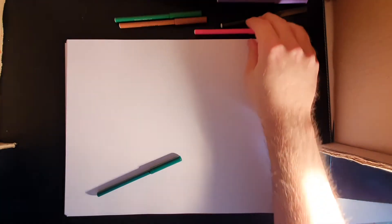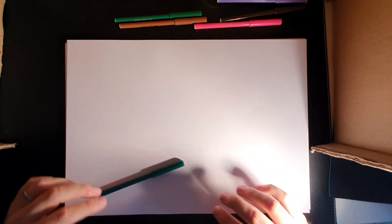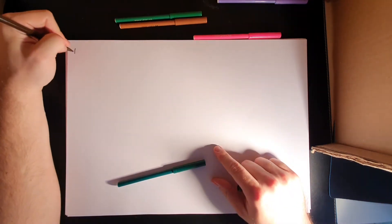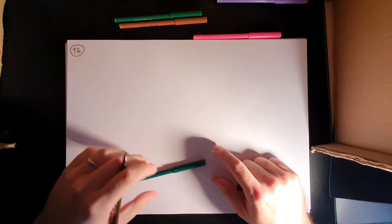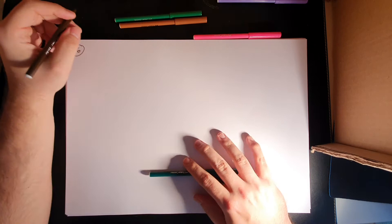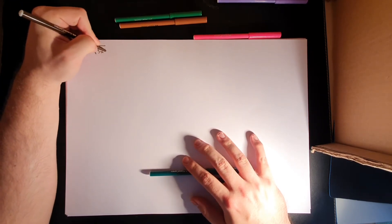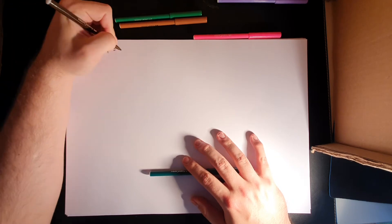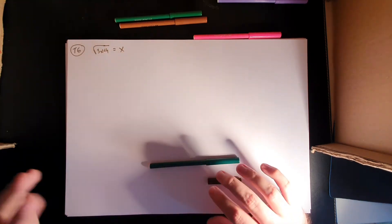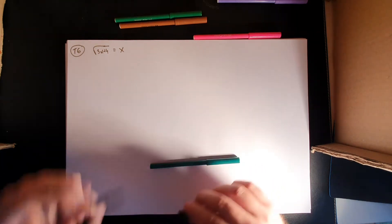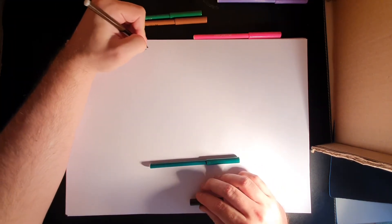Welcome back to the second part of videos about irrational equations. Let's look at the following task, task 6. The equation is: square root of 3x plus 4 equals 2x. Now we know a little bit more considering the tasks we did so far. The first thing is we should start with the condition.